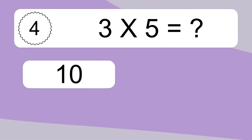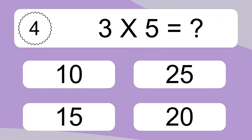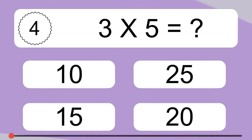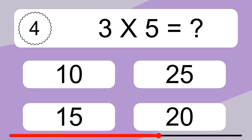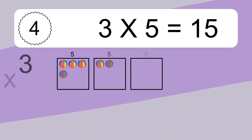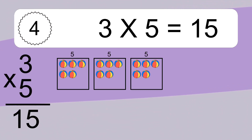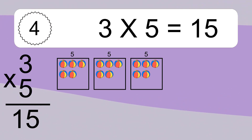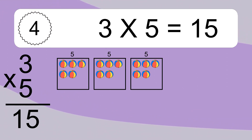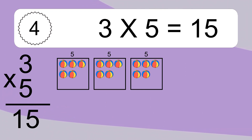3 times 5 equals what? 3 times 5 equals 15. We have 3 boxes, and each box has 5 colorful balls inside. If you count all the balls in all the boxes together, you will have 3 times 5 balls. This equals 15 balls.